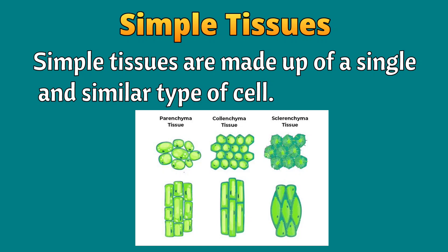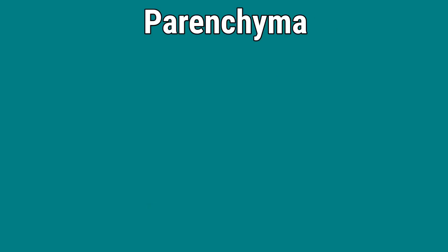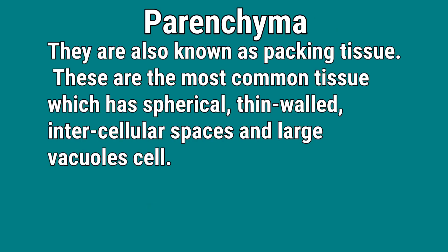First one: parenchyma tissue. Parenchyma is also known as packing tissue. These are the most common tissues, which have spherical thin-walled cells with intercellular spaces and large vacuoles. You can observe this in the picture.